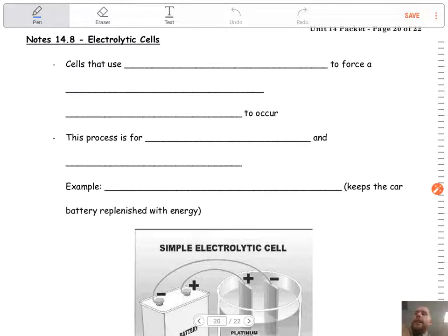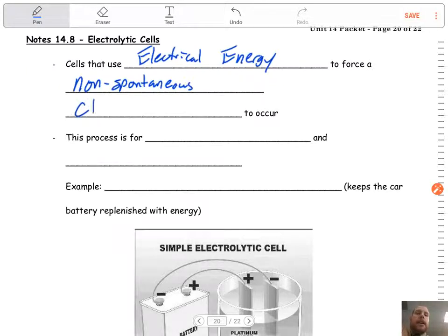I guarantee you you're going to see one or the other come June. So, electrolytic cells, these are cells that use electrical energy to force a non-spontaneous, that's the difference, one of the big differences here with electrolytic cells versus a galvanic or voltaic cell.